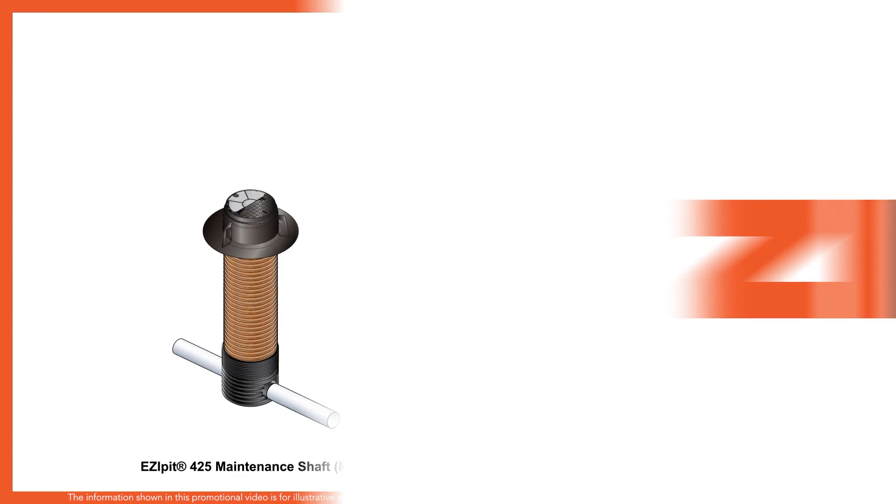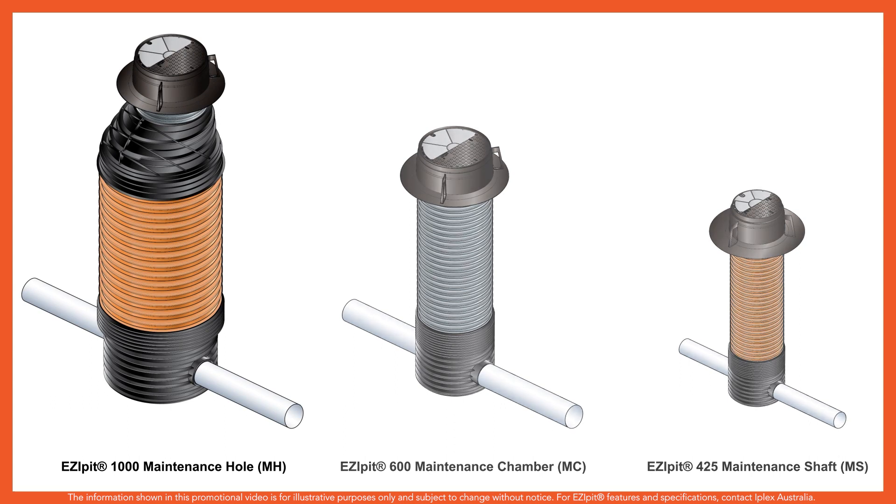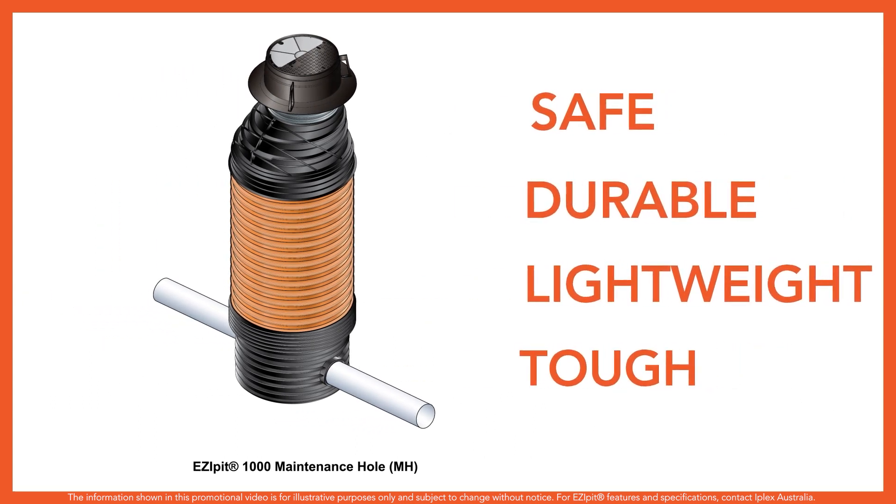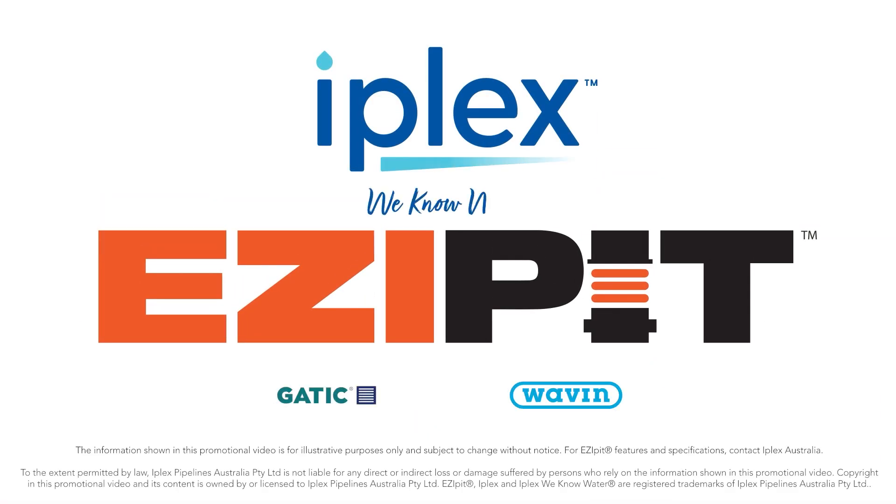With the 425 maintenance shaft, 600 maintenance chamber and 1000 maintenance hole, EasyPit is a safe, durable, lightweight and tough solution for harsh sewer environments. EasyPit from IPLEX. We know water.